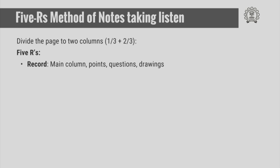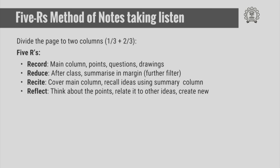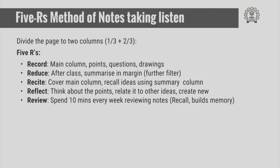The 5Rs represent: Record, Reduce, Recite, Reflect, and Review. In the Record stage we record information in the main column in terms of points, questions, or drawings. After the class we summarize the whole lecture in the margin — that is why it is called the Reduce phase.